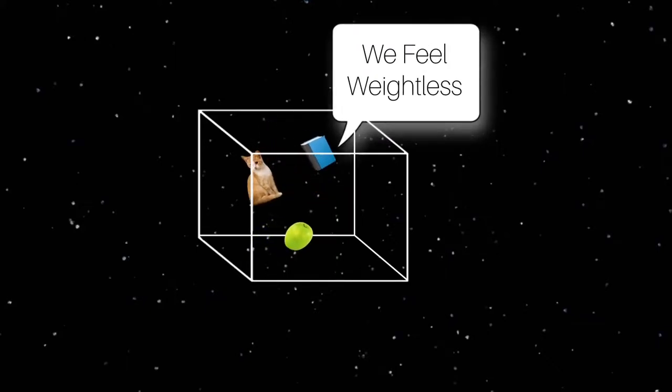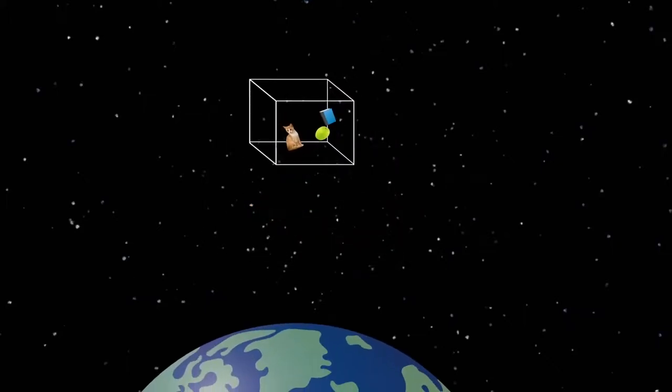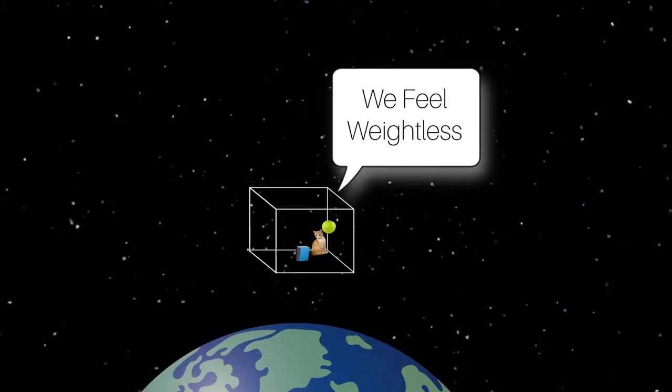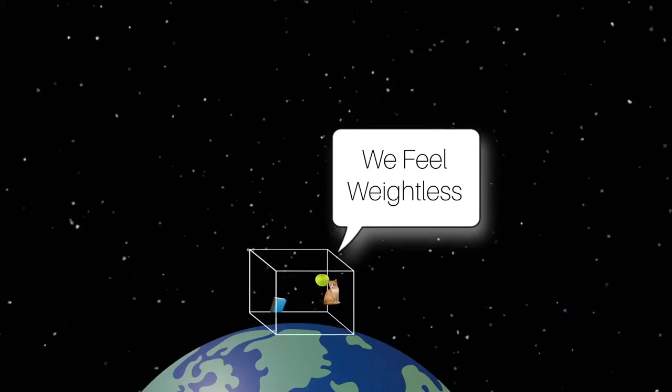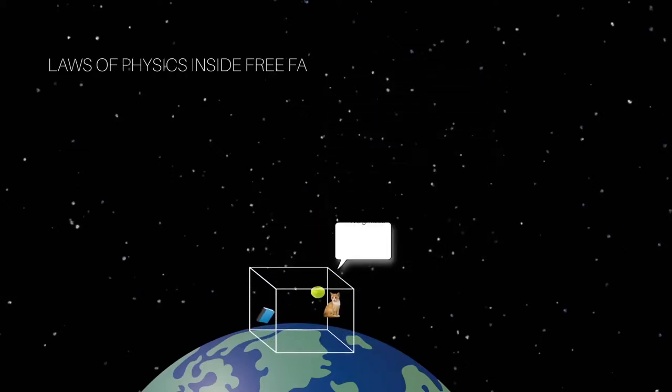But if the objects were inside a box which is falling down on earth, they would also float around, feeling weightless. Hence Einstein said that the laws of physics inside free fall and outer space were the same.